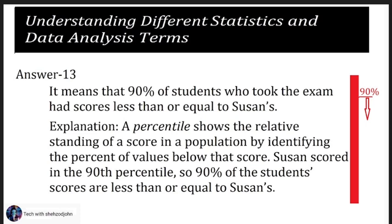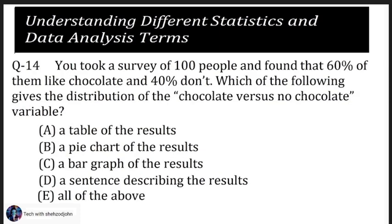Explanation: a percentile shows the relative standing of a score in a population by identifying the percent of values below that score. Saucon scored in the 90th percentile, so 90 percent of the students' scores are less than or equal to Saucon's score.